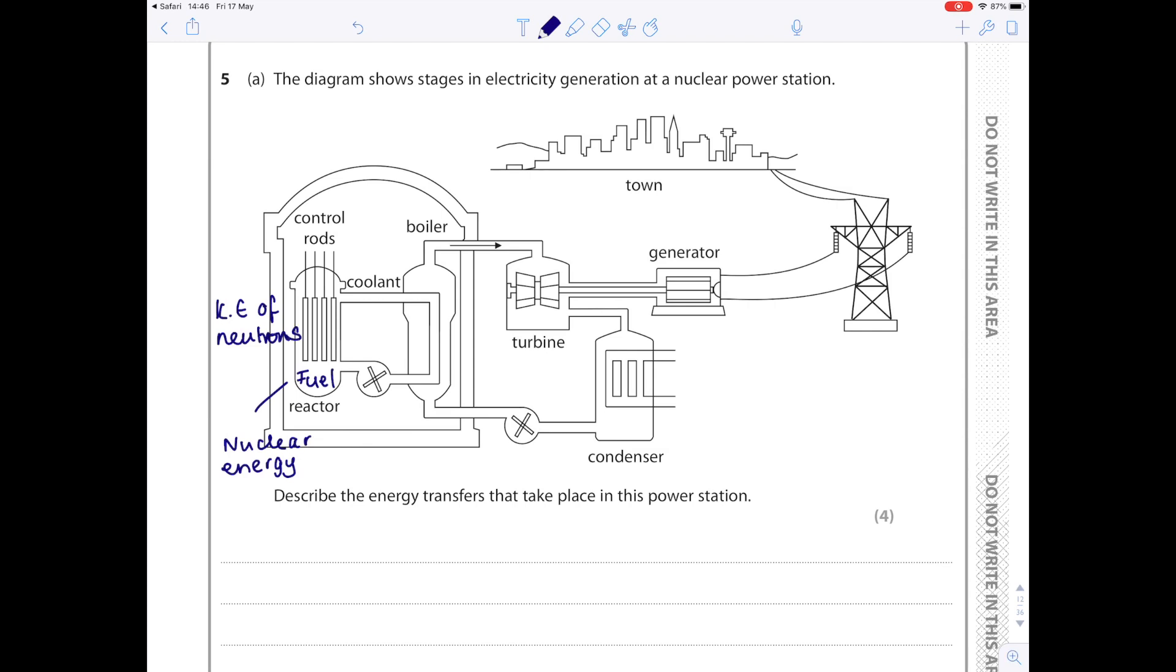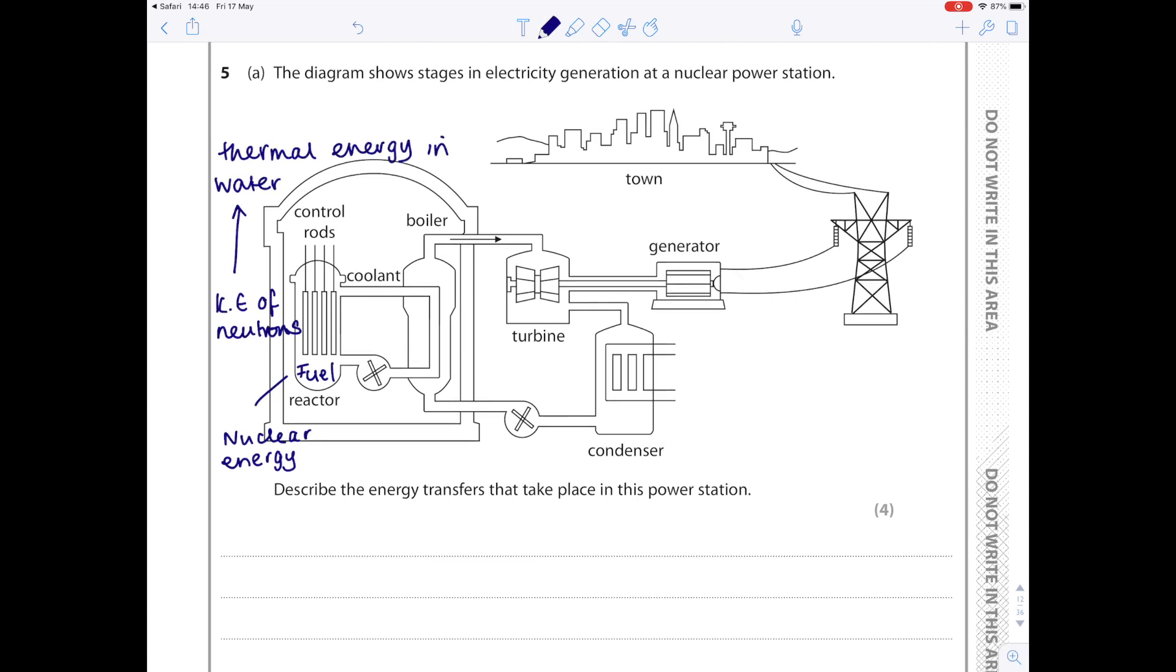Remember, because it's a nuclear reactor, then that will be nuclear energy found within that fuel. And remember when we're talking about nuclear power stations, we're talking about nuclear fission. A neutron collides with the uranium nuclei, the nuclei splits into two daughter nuclei and three neutrons are released, and that will therefore be the kinetic energy of neutrons, which gets converted to thermal energy in the water.